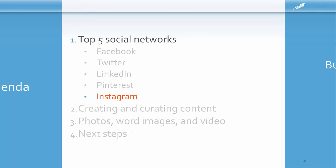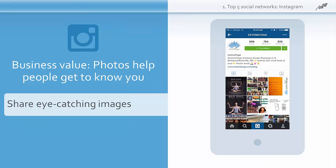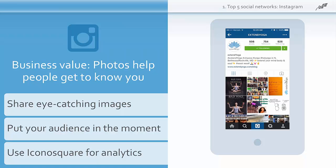Our last social network today is Instagram. Instagram is different because most activity takes place in the smartphone app — you can access Instagram on desktop, but you can't post photos from there. Instagram users post images and videos to the app. This is the Instagram profile for Extend Yoga located in Bethesda and Rockville, Maryland. The benefit of using Instagram is that photos allow your followers to get to know you and your business. Showing your audience parts of your business they wouldn't otherwise see can help build relationships. Be choosy about which images you post — don't share everything. Photos should be visually interesting, tell a story, or convey an experience. Note that Instagram does not have a native analytics platform, so you need to use a third-party tool like Iconosquare.